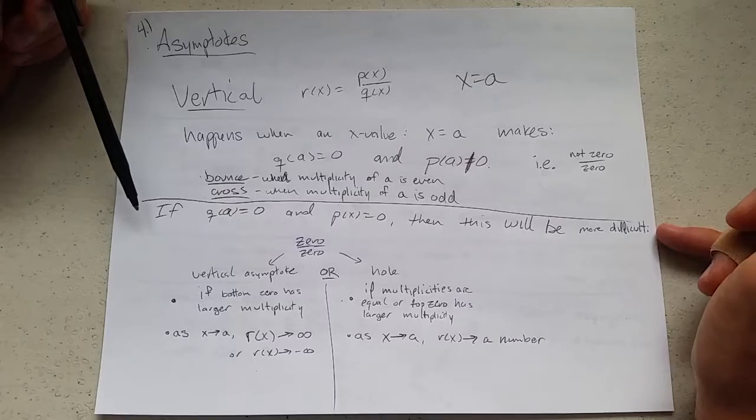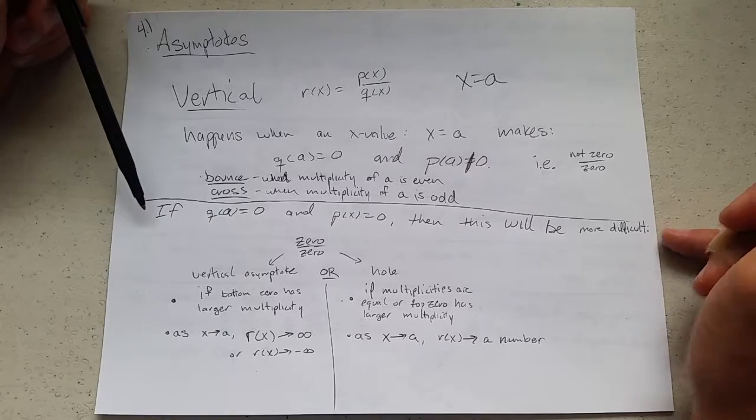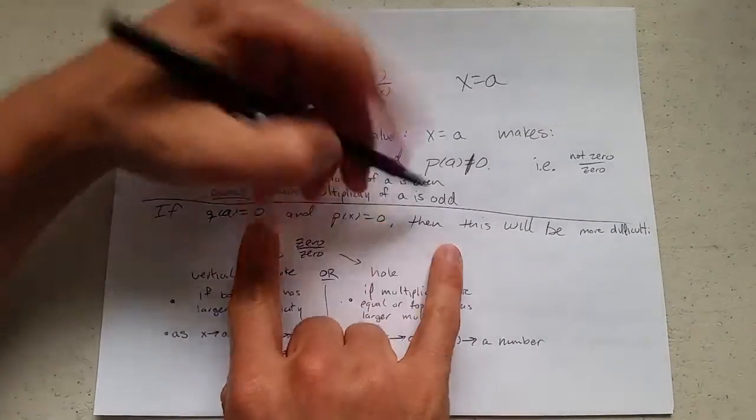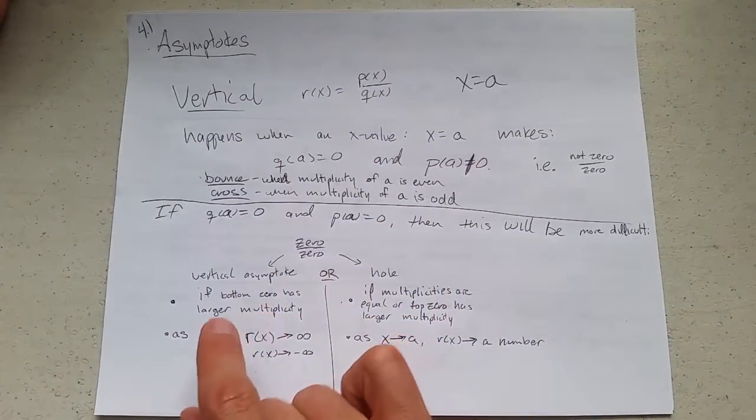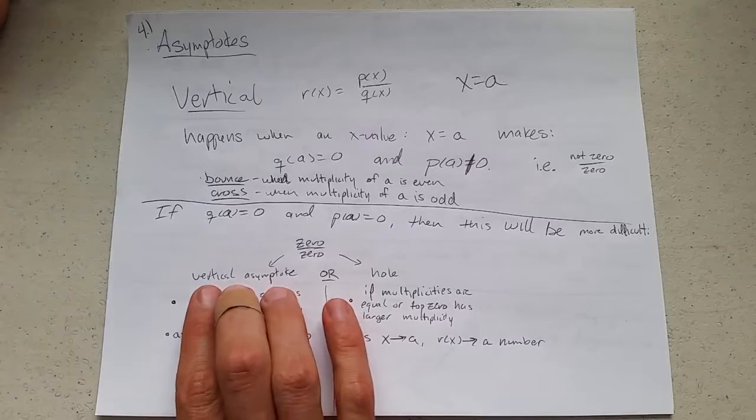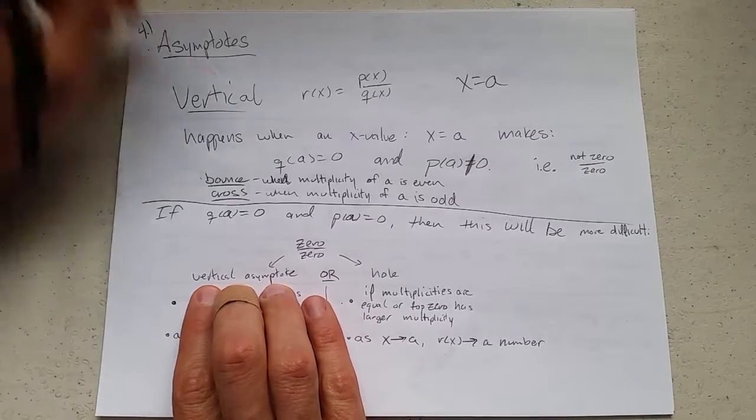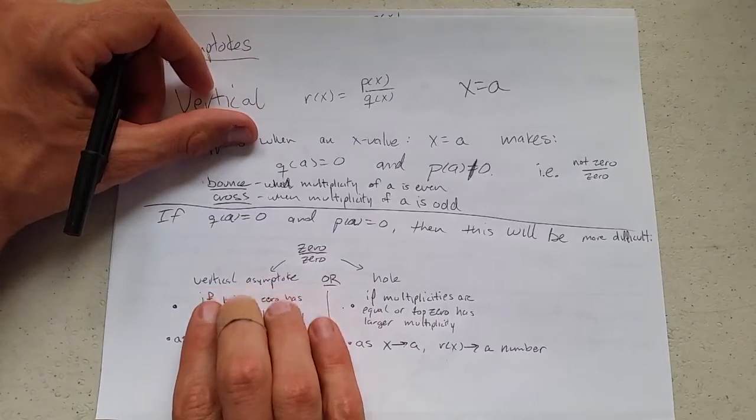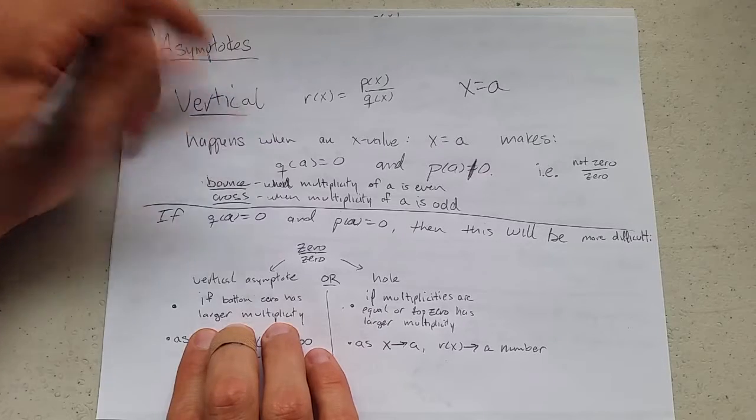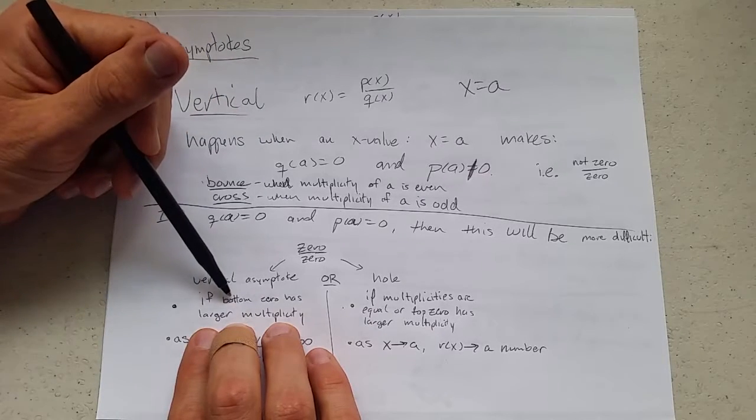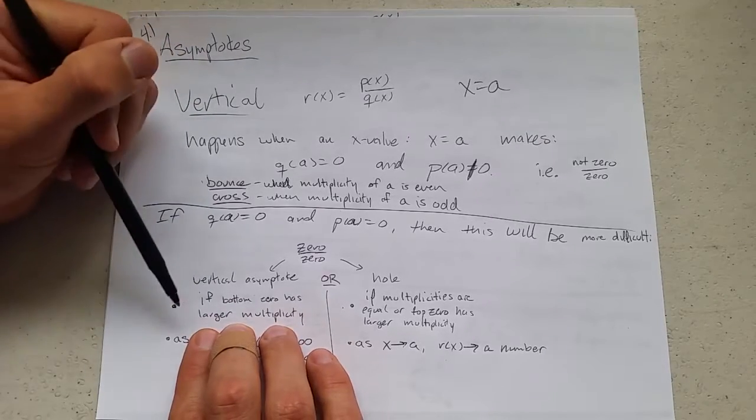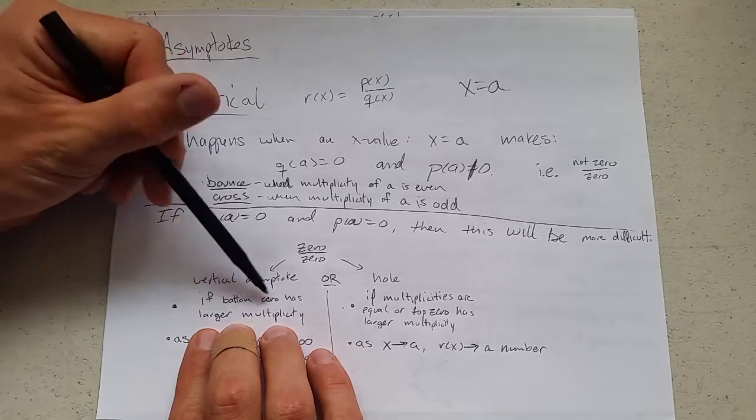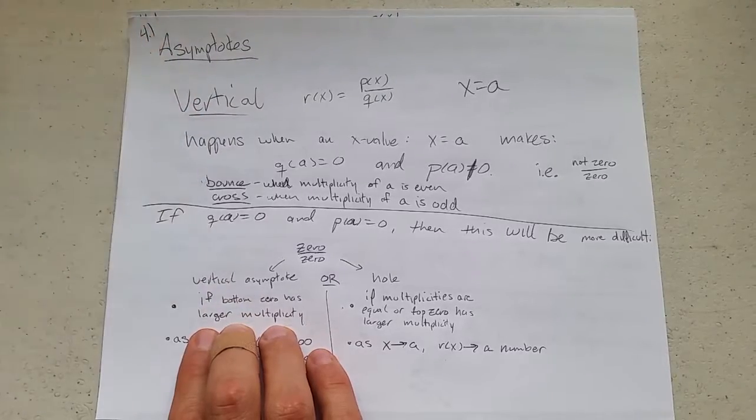Now unfortunately, if you get 0 over 0, things are a little more complicated. So if q of a is 0, and p of a also equals 0, we have to look a little bit further. So you could get a vertical asymptote. How does that happen? There's two ways to look at it. One of them, if you just consider multiplicities, basically the bottom 0 has a larger multiplicity. I like to think of this as the denominator wins. So if the bottom 0 has a larger multiplicity, you get your vertical asymptote.